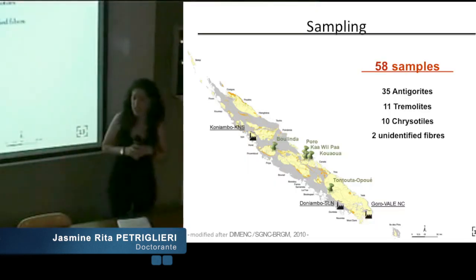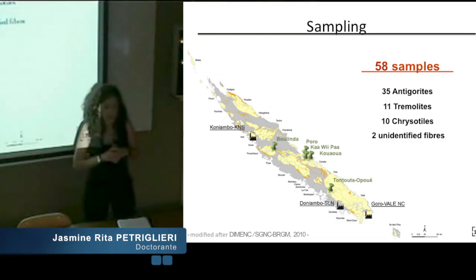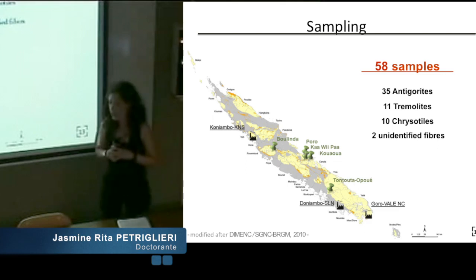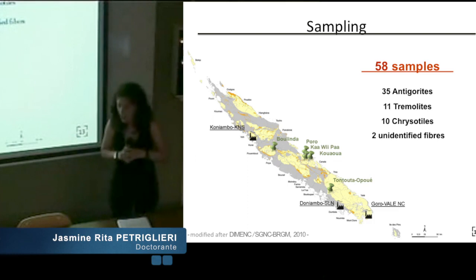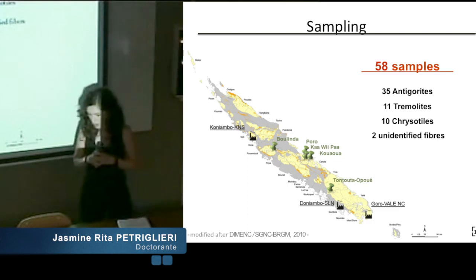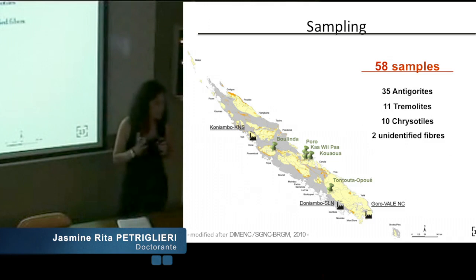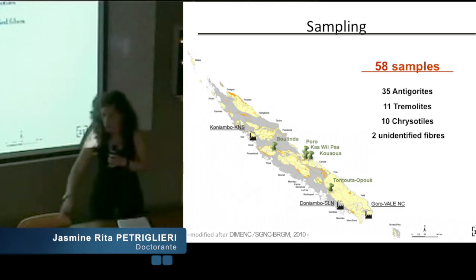Concerning the sampling, 58 samples were collected by geologists of mining companies: 35 antigorites, and two unidentified fibers. All samples present different degrees of alteration and were collected from the most important geological units of the country.